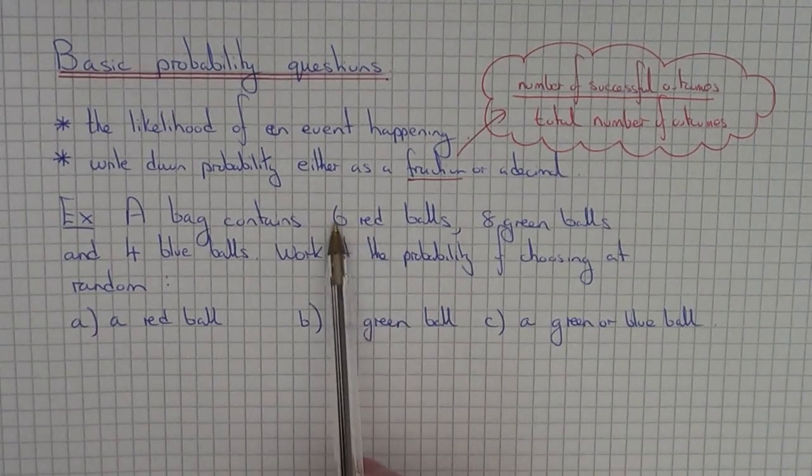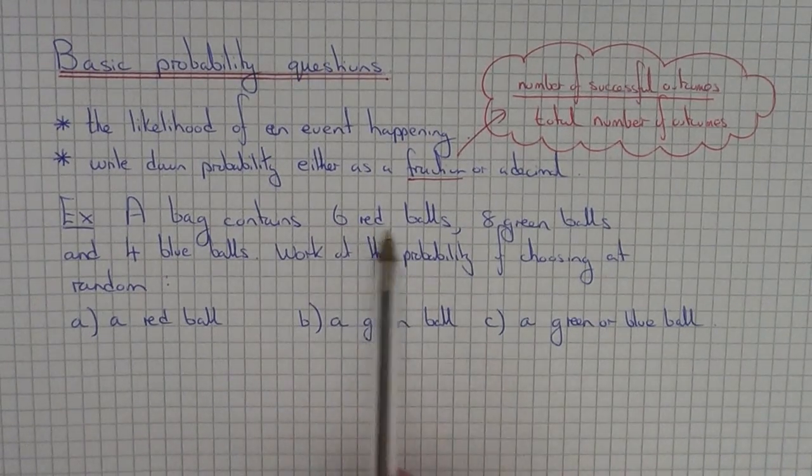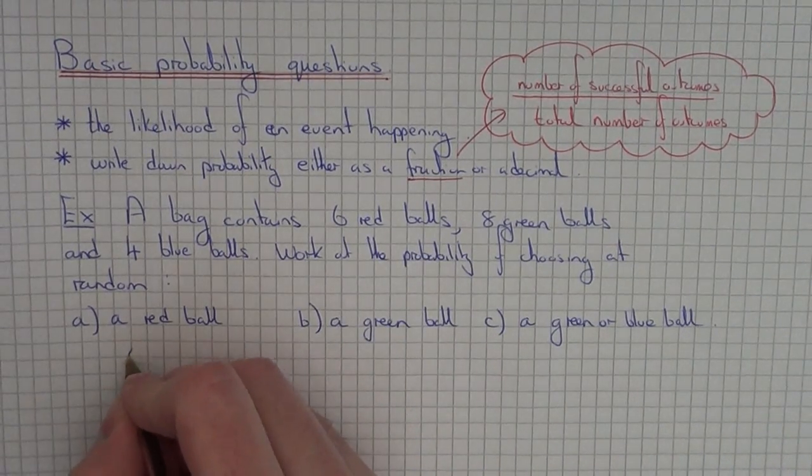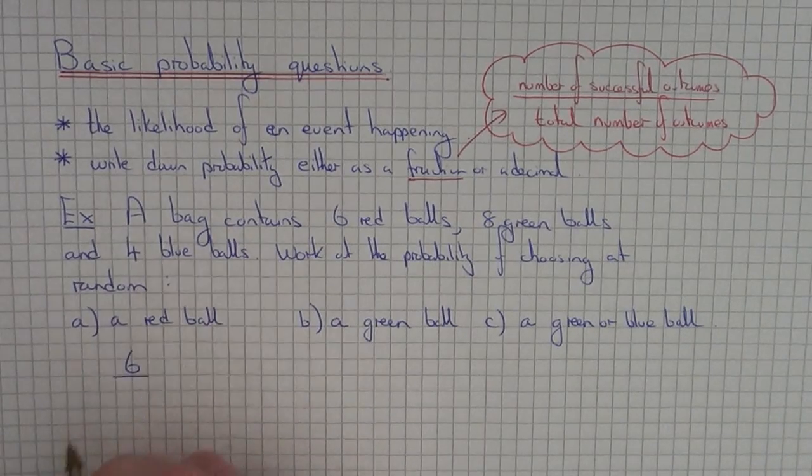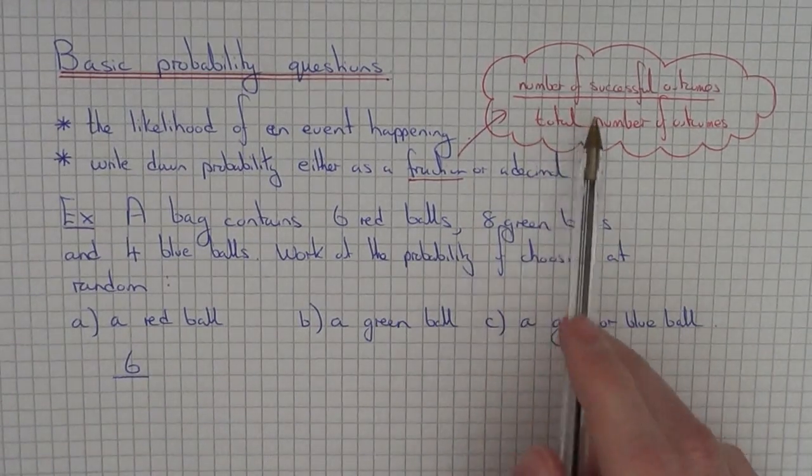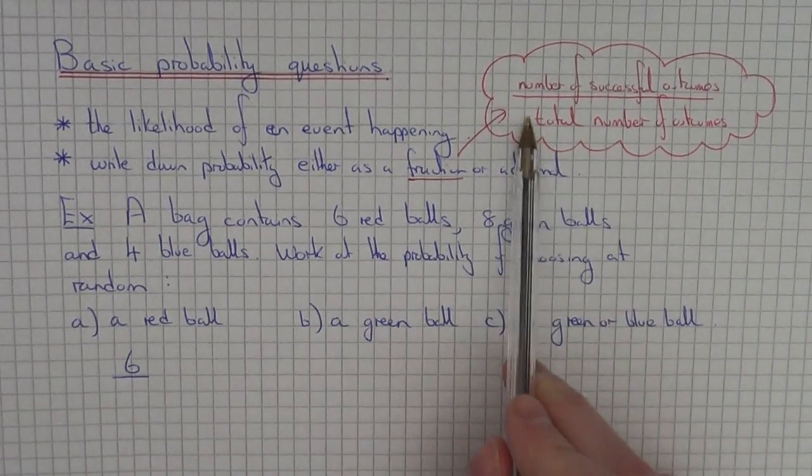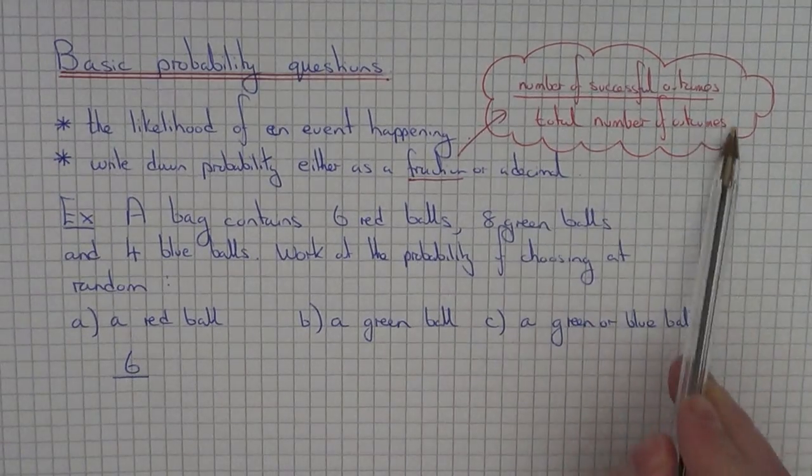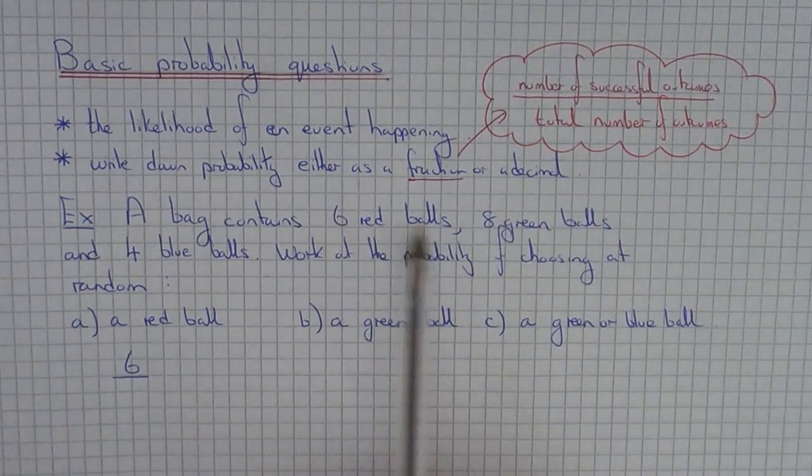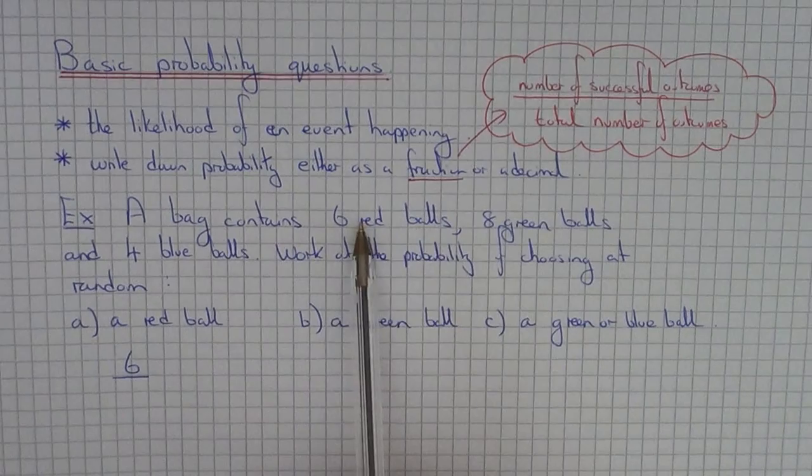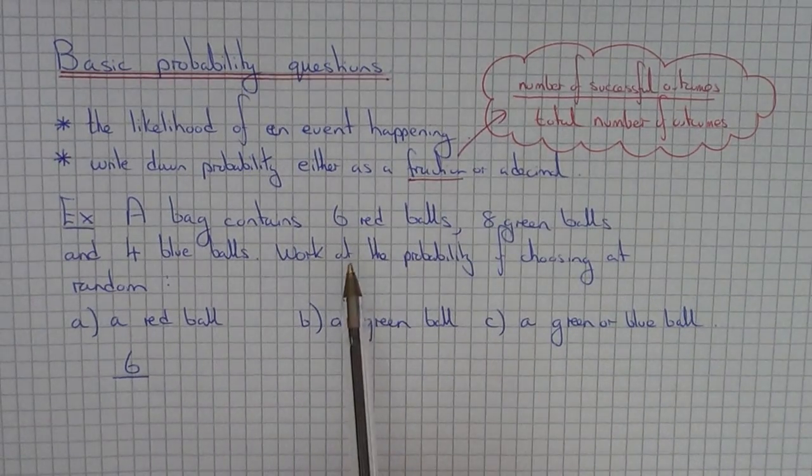In the bag we have 6 red balls, so put that on the numerator of your fraction. Then all we need to do next is write down the total number of outcomes. You can get the total number of outcomes by adding up how many balls there are altogether in the bag.